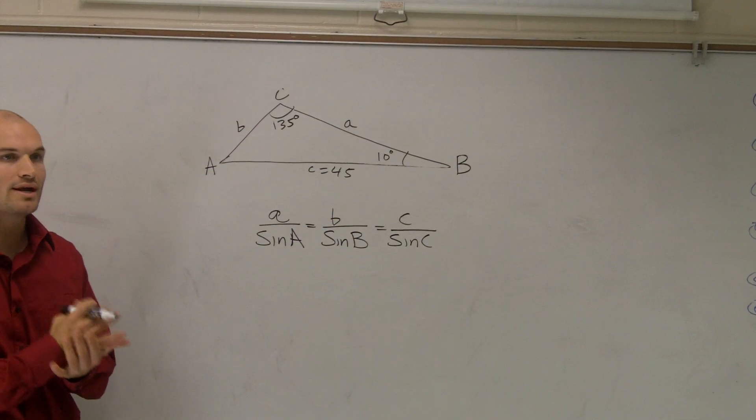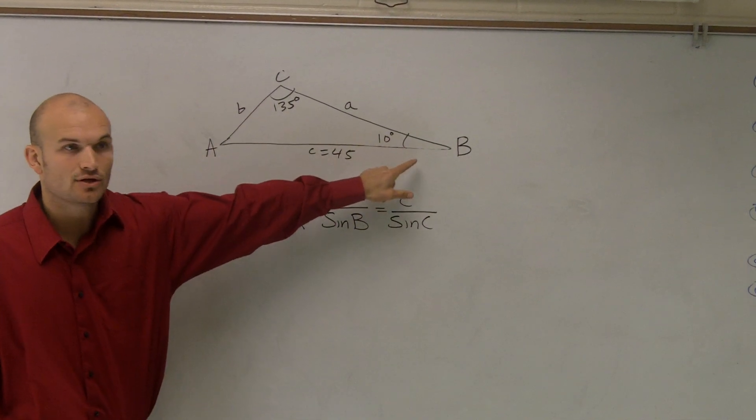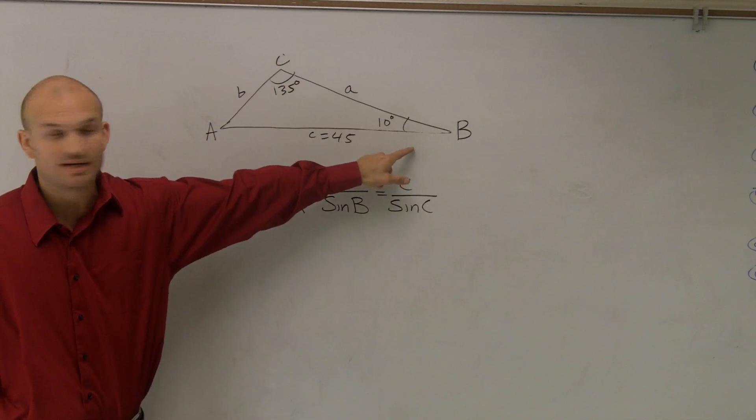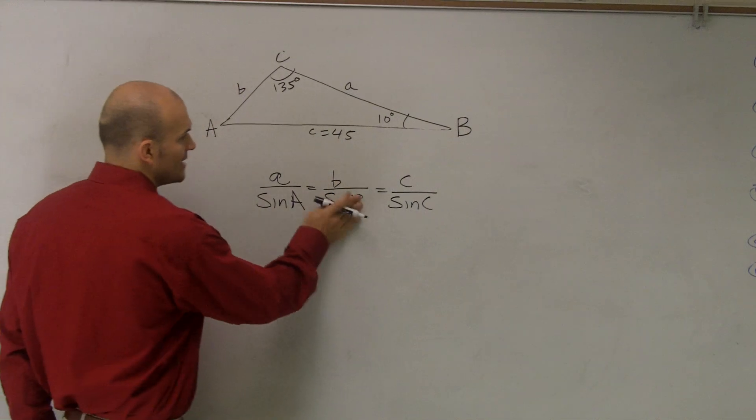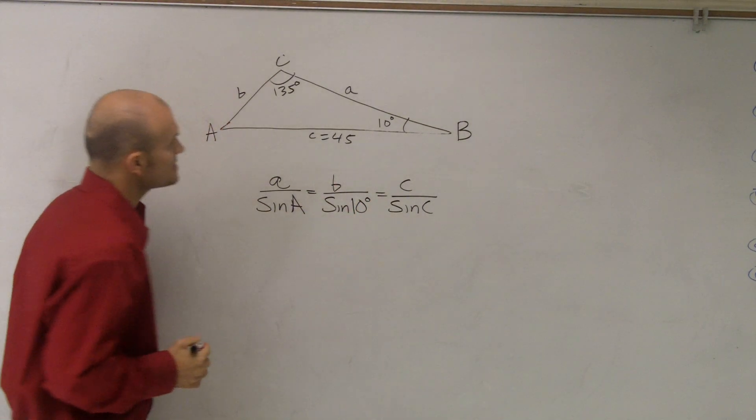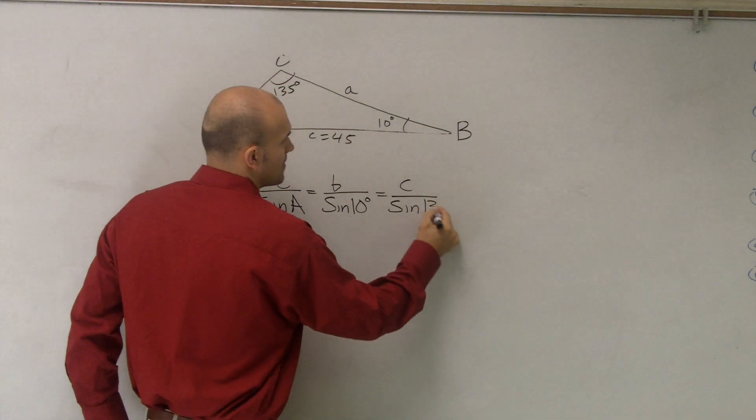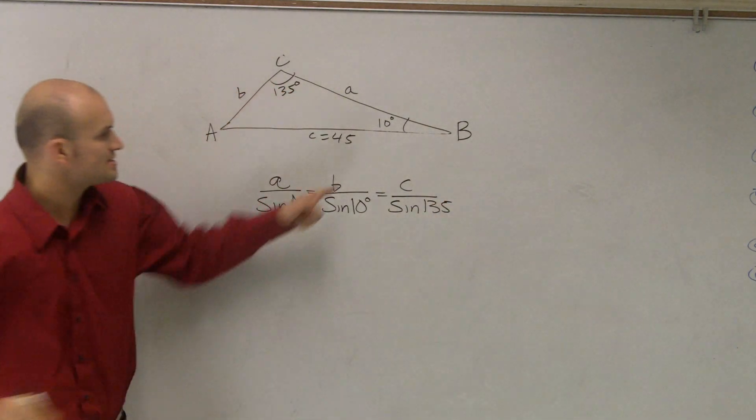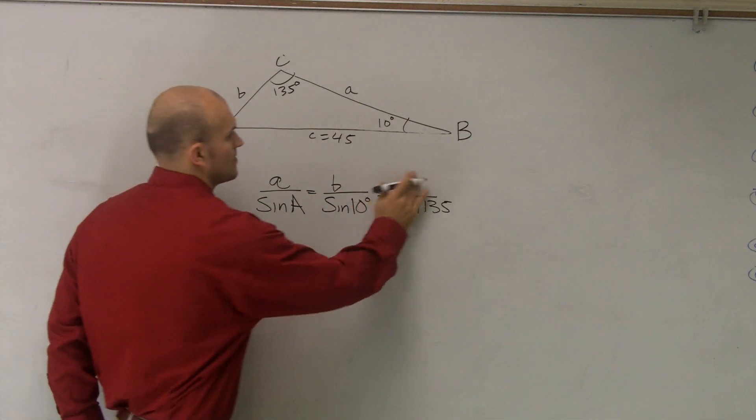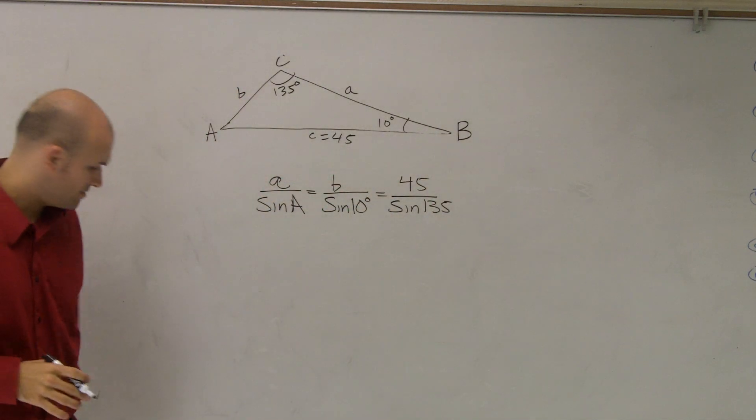So now I need to look at what is all the information I know. I know what the angle of B is, right? So I'll add in that information, 10 degrees. I know what the angle of C is, which is 135. And I know the side length of C, which is 45. But you don't know A. I do not know anything of A right now, right?